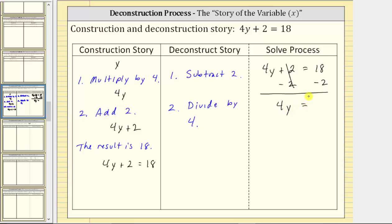The left side simplifies to four y. We have four y equals 18 minus two, which is equal to 16. Step two of the deconstruction process is divide by four. We now divide both sides by four. On the left, four divided by four simplifies to one, and one times y is y. On the right, 16 divided by four is equal to four. Y equals four is the solution to the equation.